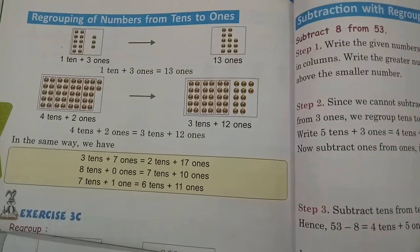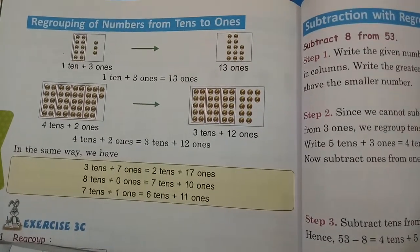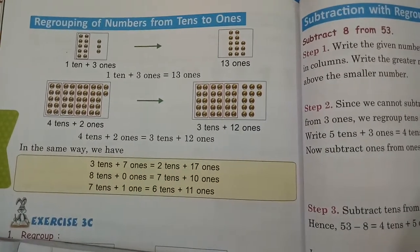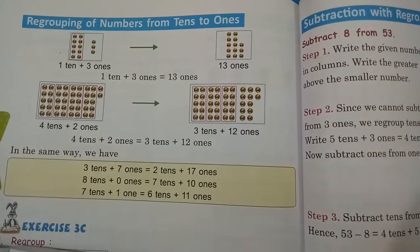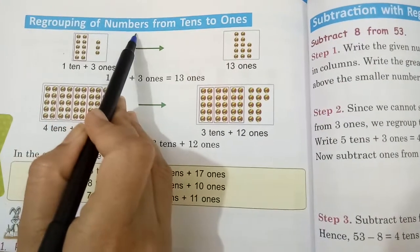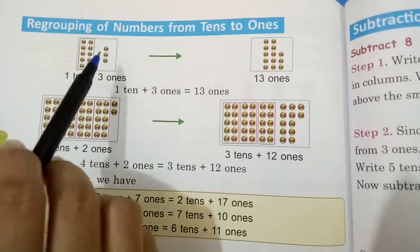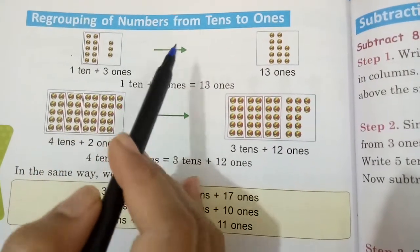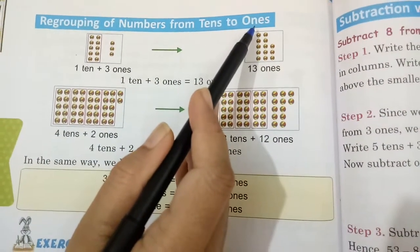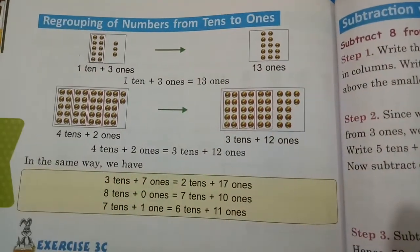Good morning students. Last time we started our chapter on subtraction and completed exercises 3A and 3B. Today we will start exercise 3C. The topic is regrouping of numbers from tens to ones. Open your books to page number 100.